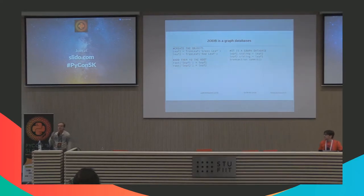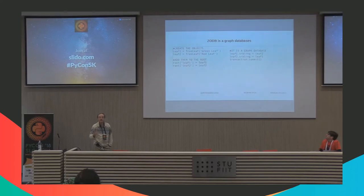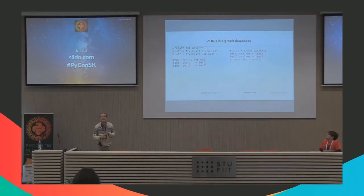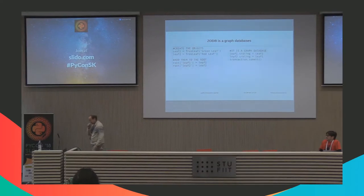Is it a graph database? Yes, it is. Imagine our tree object — we created two leaves under it, but we can also set leaf1.sibling equal to leaf2, and set leaf2.sibling equal to leaf1, and suddenly we have a graph database. This is a very simple example, but you can do this with arbitrary branches of the tree. You do transaction.commit and everything just works.